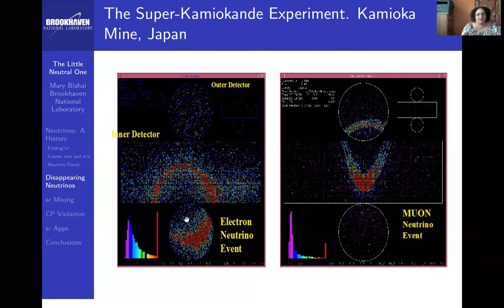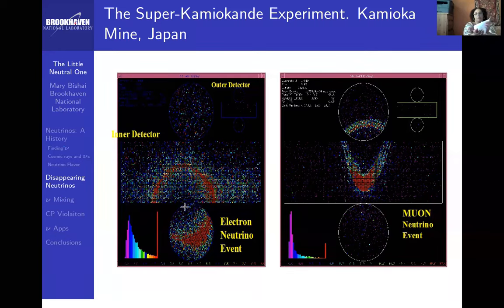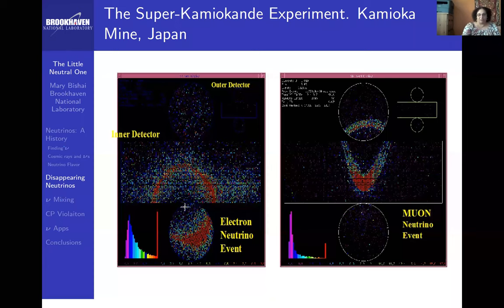By studying the light cone, you can tell the direction of the particle coming in, because the cone starts from a point. The direction of the cone and the time of arrival of the light let you reconstruct the direction. Typically the electron or the muon comes in from the same direction as the incoming neutrino, from the law of conservation of momentum.